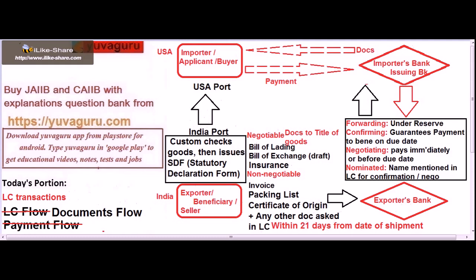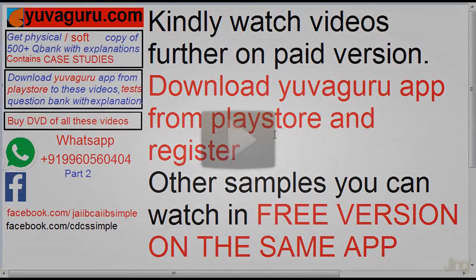Once the bank has received the documents, it can act in either of three roles: first as a forwarding bank, second as a confirming bank, and third as a negotiating bank. These three roles are dealt with in detail in a separate video, so kindly watch those.